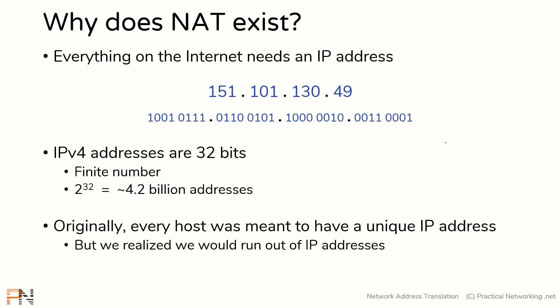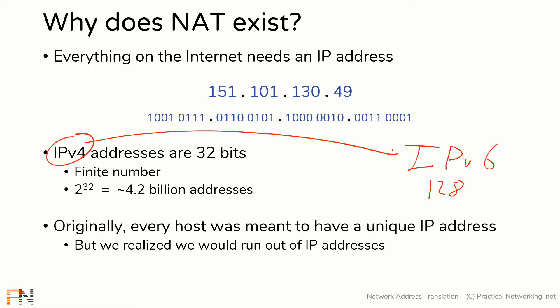The long-term solution was to recreate an IP addressing scheme known as IPv6. An IPv6 address has 128 bits, giving us a significantly larger address space to give addresses to all the types of devices we need in the world. But moving from IPv4 to IPv6 is going to be a long, drawn-out process. I'm recording this class in 2020, and IPv6 came out in 1998 — and as of today, only about 20 to 25 percent of the world is on IPv6.